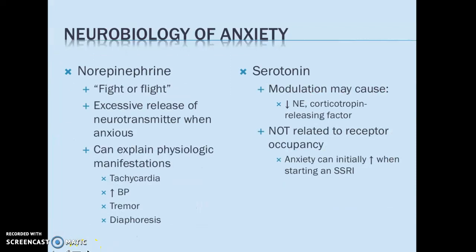Looking more into detail about our neurotransmitters, we have norepinephrine, which is our classical fight-or-flight neurotransmitter. When we have an excessive release of norepinephrine within the brain triggered through anxiety, we can see a lot of physiological manifestations. These include tachycardia, which is an increased heart rate; increase in blood pressure; tremor, which is shaking of the muscles; and diaphoresis, which is sweating — all of those unpleasant experiences when we're nervous.